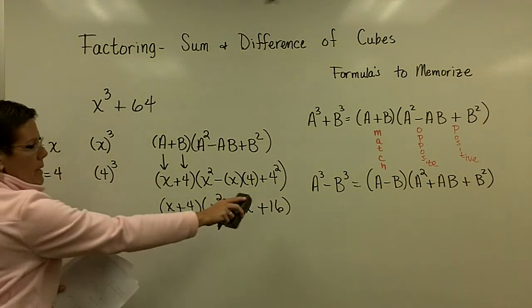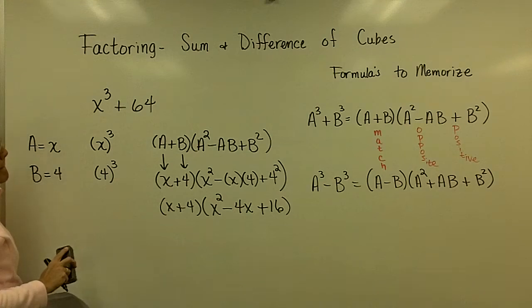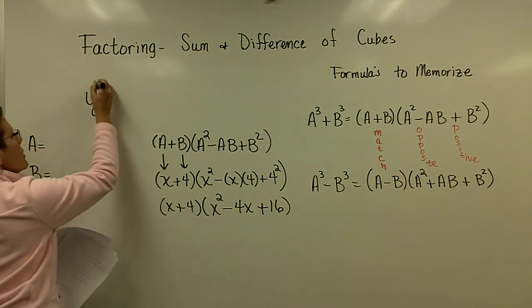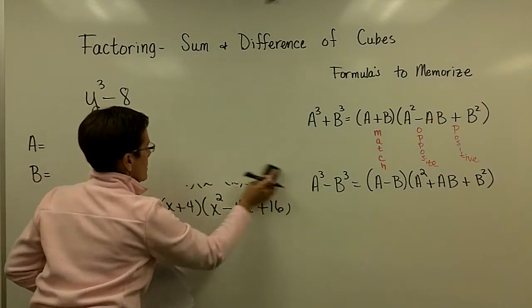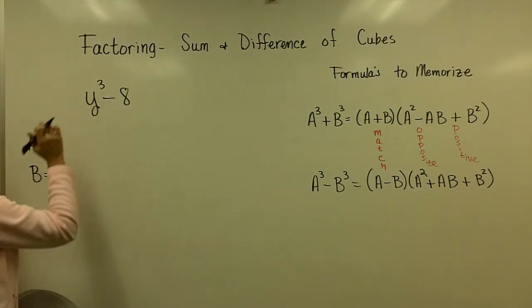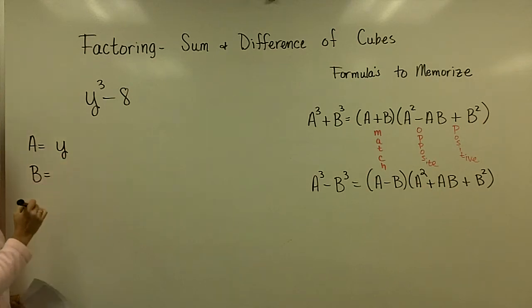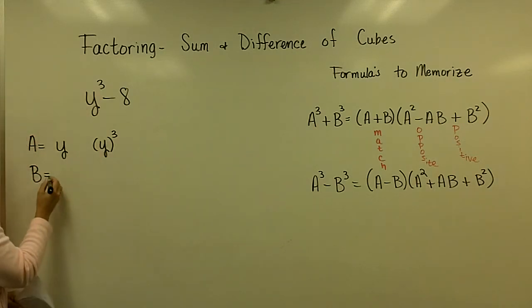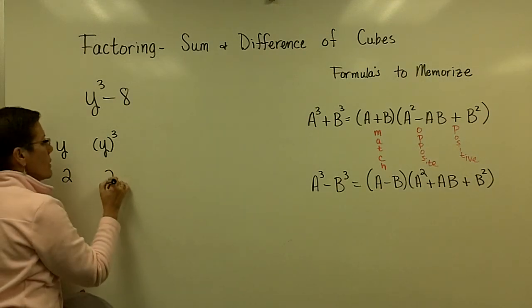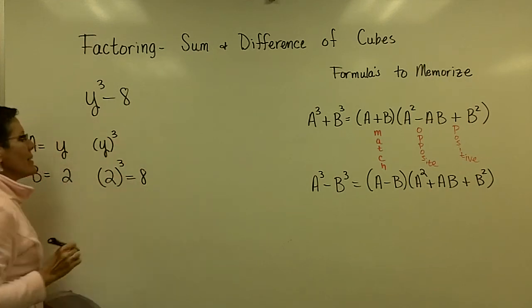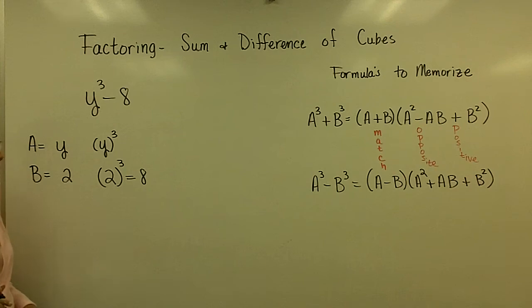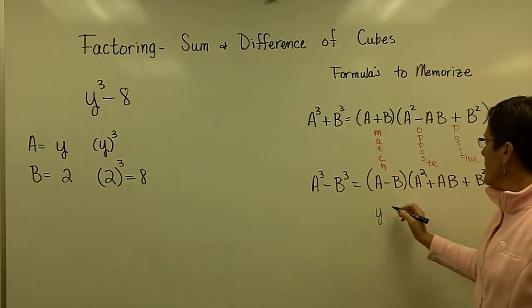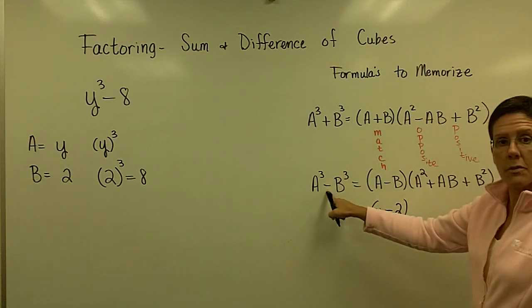Let's do one more — a difference of cubes. The problem is y cubed minus 8. When the first term is a letter, I look for what letter raised to the third power gives me y cubed — that's y. Then what number raised to the third power gives 8 — that's 2, or you can find the cubed root of 8 on your calculator. So A equals y and B equals 2. For a difference of cubes, the binomial always has a minus sign, giving y minus 2.